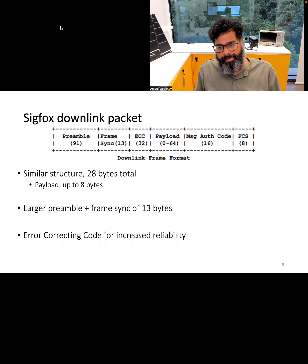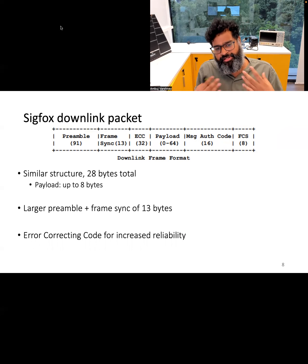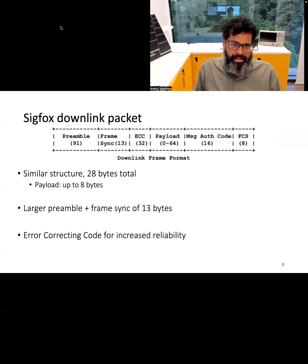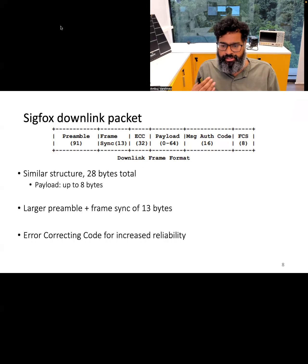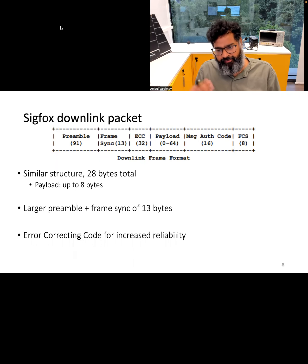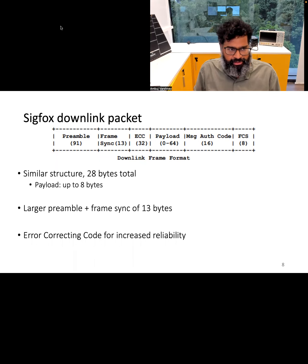The downlink packet has a very similar structure but an even smaller payload, again reflecting the protocol's uplink focus. It has a somewhat larger preamble, while other fields are similar to the uplink packet.